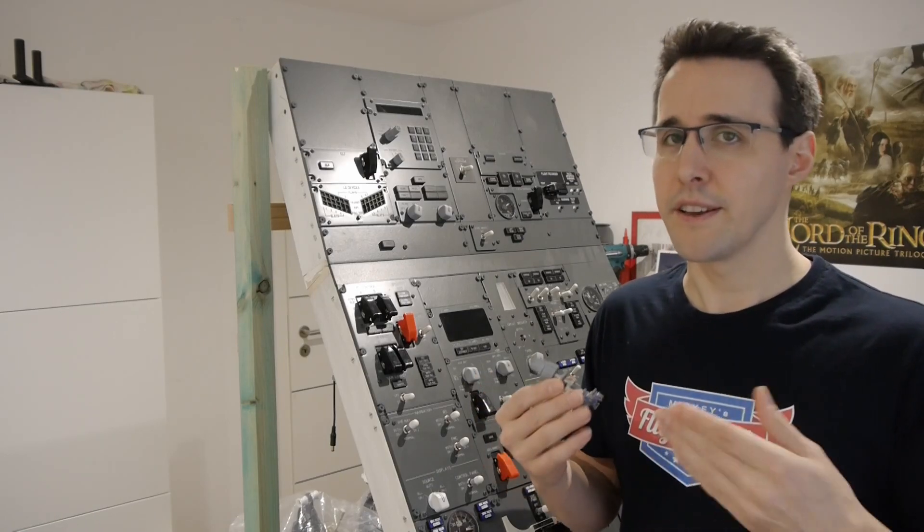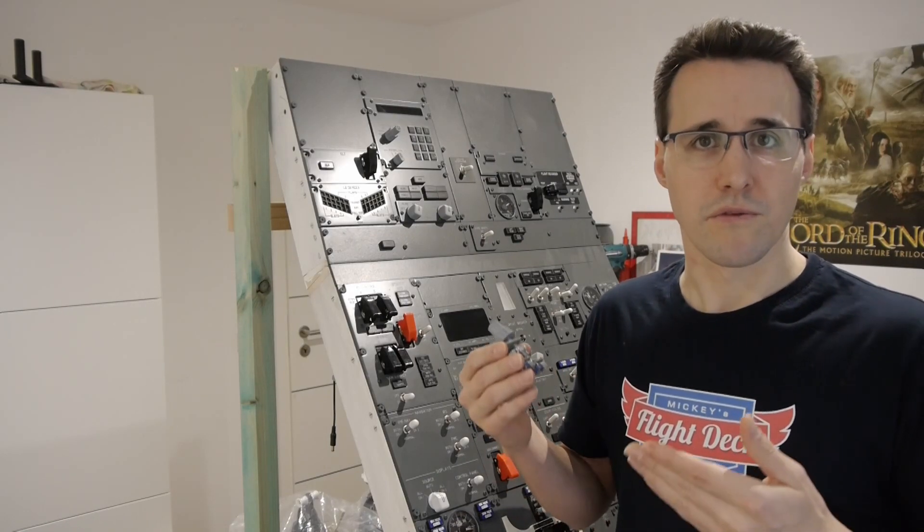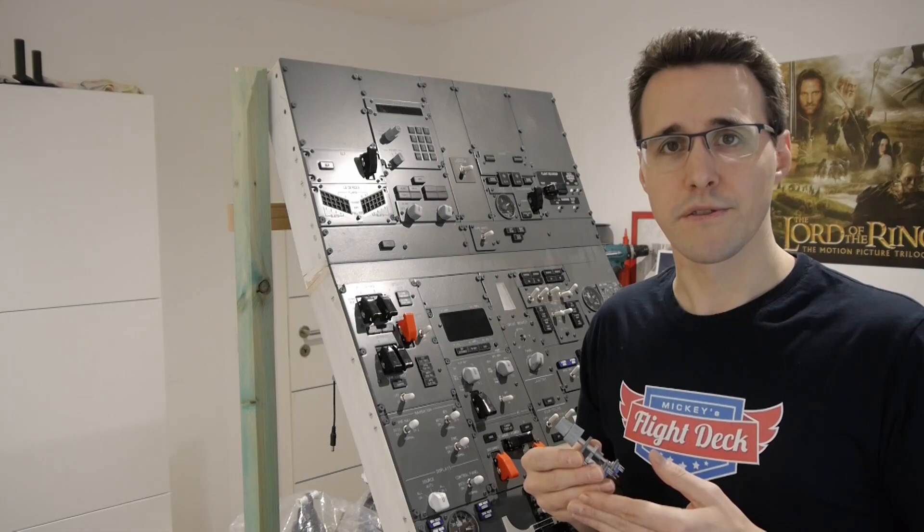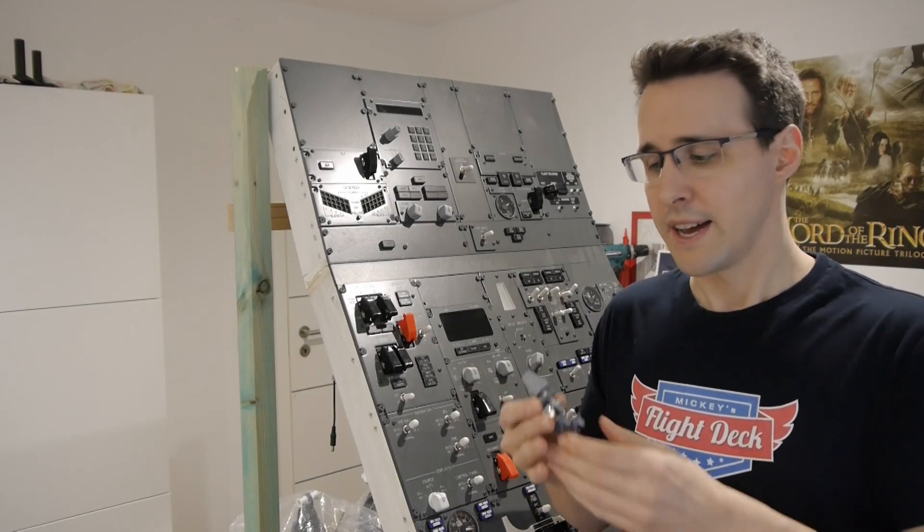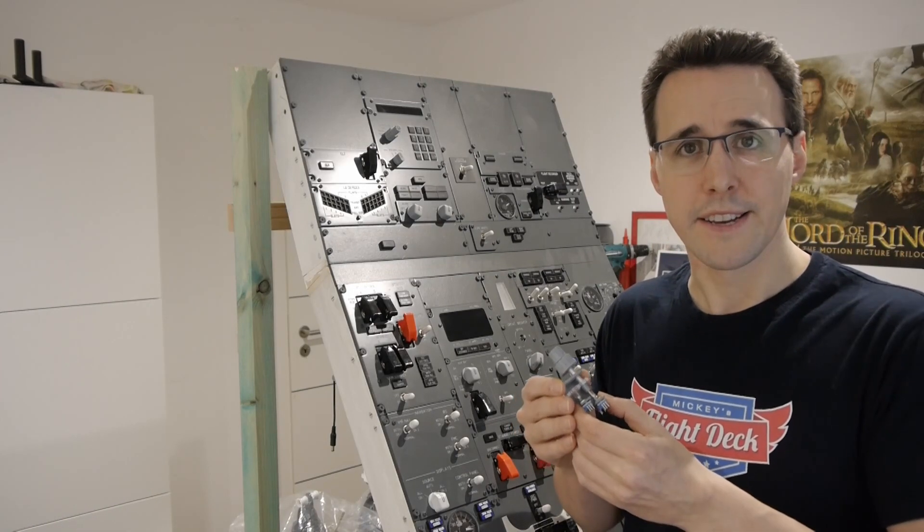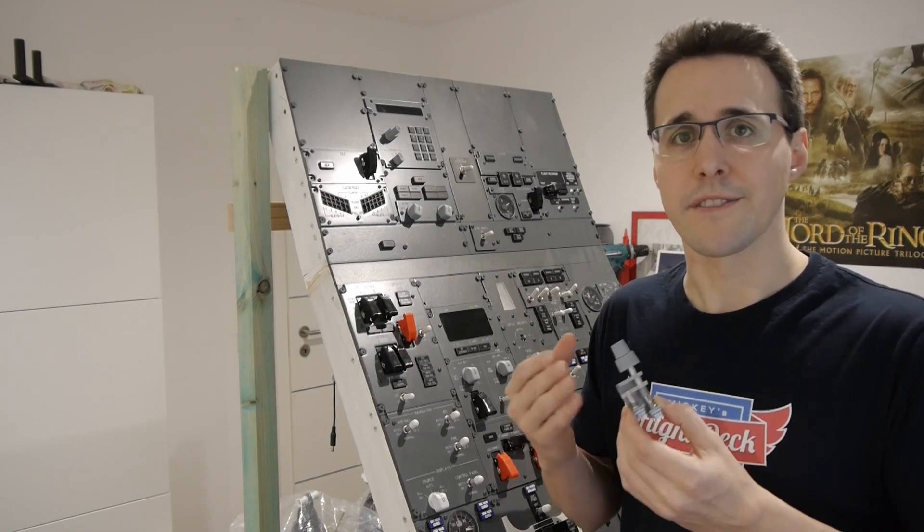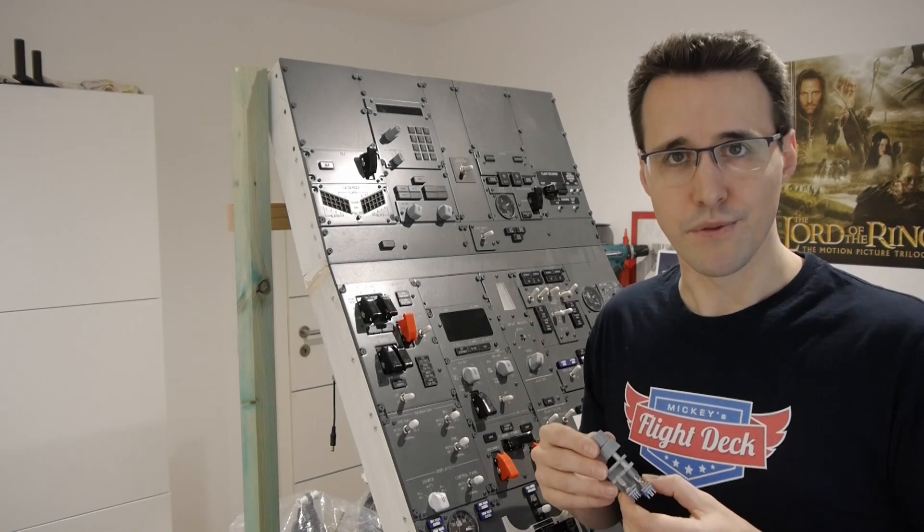You can try out if you can print them on your resin or filament printer. And if not you should now have the knowledge how such a dual rotary encoder is made so that you can design a gear that you can produce.